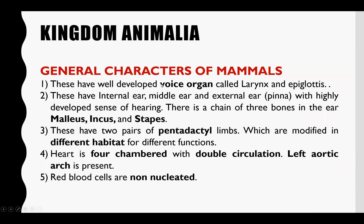ان کا voice organ larynx ہے اور اس کے اندر vocal cords ہوتے ہیں جو کہ voice produce کرتے ہیں۔ ان کا internal ear، middle ear، اور external ear ہوتا ہے۔ باہر سے جو کان کا حصہ نظر آتا ہے اسے pinna کہتے ہیں جو ایک ear canal سے middle ear کے ساتھ connected ہوتا ہے، اور اس کے بعد internal ear ہوتا ہے۔ Ear کے اندر three bones کی chain ہوتی ہے۔